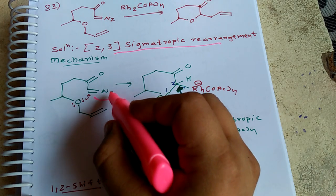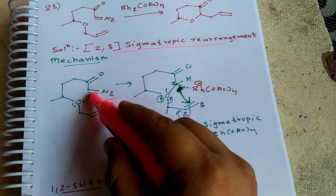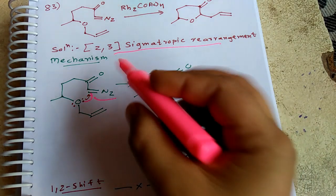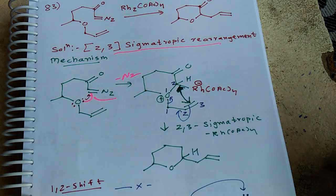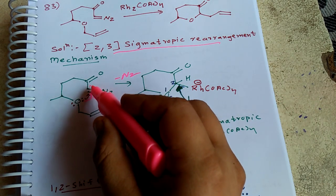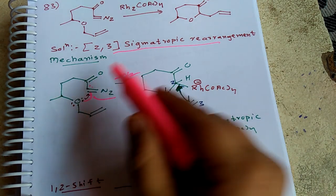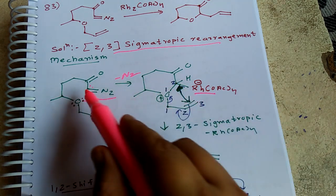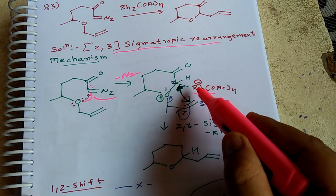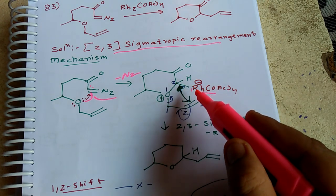Oxygen attacks at this position. Then nitrogen is removed, and we also have this carbene. Rhodium attacks at this carbene position and stabilizes it. Similar to a Grignard reagent where there is a negative charge on carbon next to magnesium, here rhodium temporarily stabilizes this negative charge.